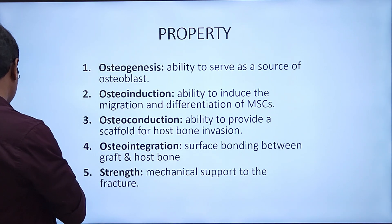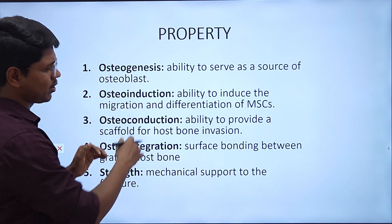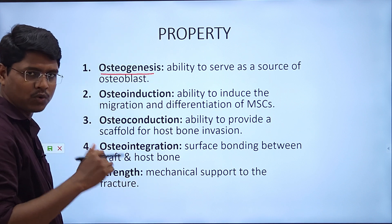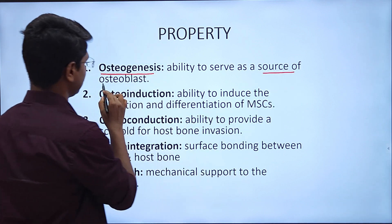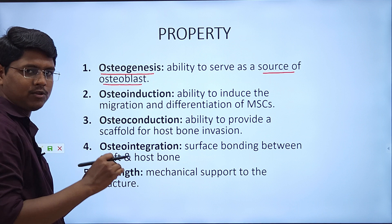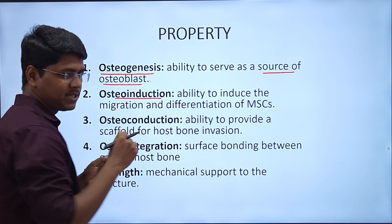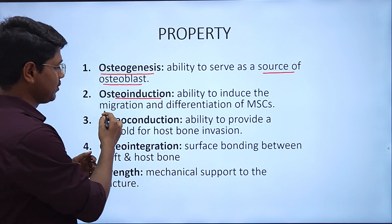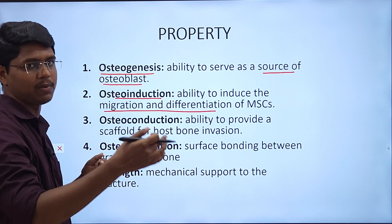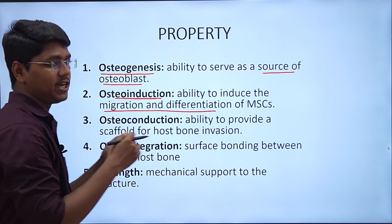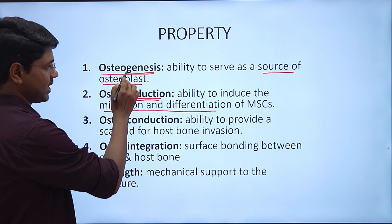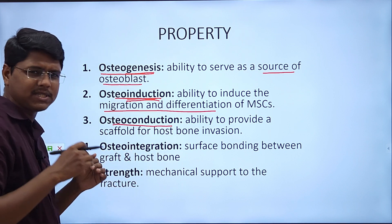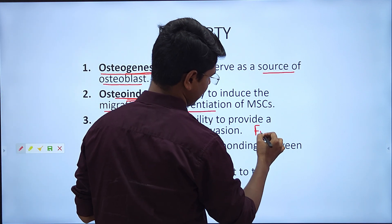Before going further, I want to explain some properties of grafts, because I will be using these terms. First is osteogenesis — it simply means ability to serve as a source of osteoblasts. Osteoinduction means ability to induce migration and differentiation of mesenchymal stem cells to osteoblasts. Osteoconduction is basically providing a framework — in scientific terms this is known as a scaffold. Many orthopedic research papers use the term scaffold, which simply means framework.